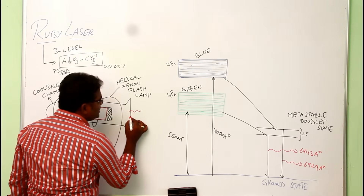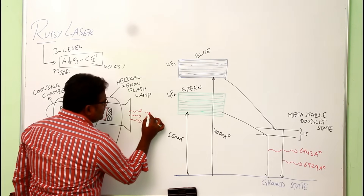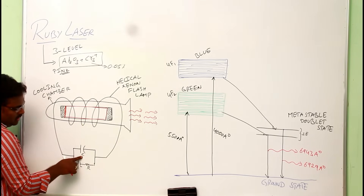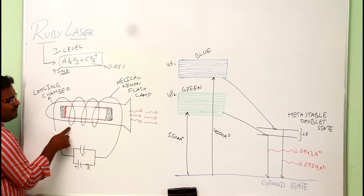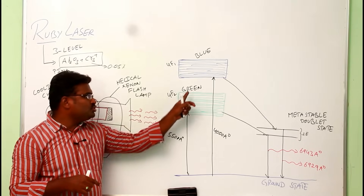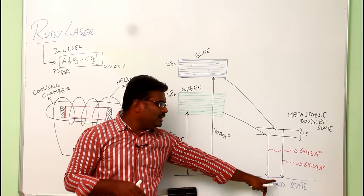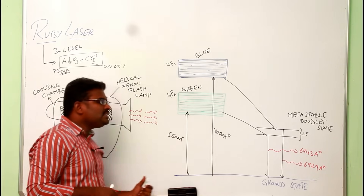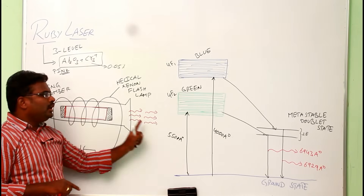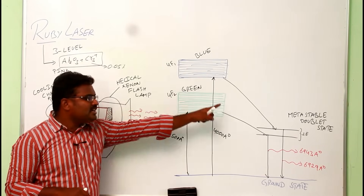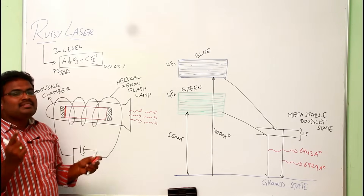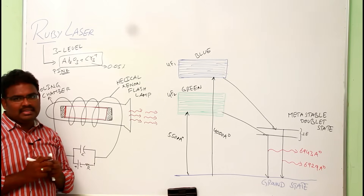The pulsated output is due to the capacitor in the xenon flash lamp. It never runs continuously — whenever switched on, the chromium atoms absorb energy and go to a higher state, and you get output. When it's in the off condition, there is no excitation and no output. So you get a pulsated output in a ruby laser, whereas in helium-neon laser you get a continuous laser.